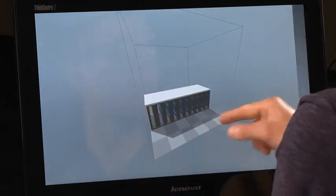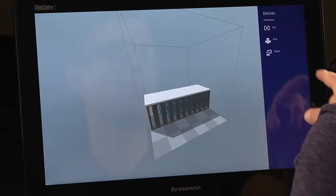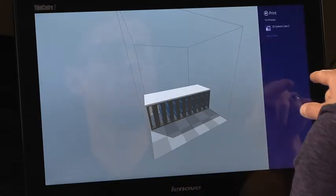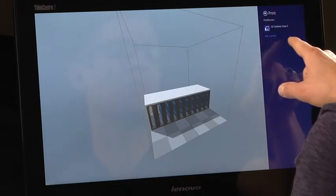When I want to print, all I need to do is swipe out the charms bar, tap on devices, tap on print, and then I select the printer that I want to use. I'm going to use the 3D Systems Cube 2 here.